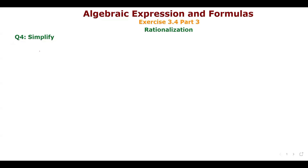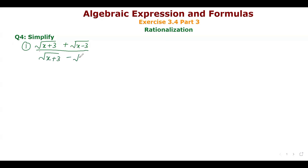We will start our work with question number 4. The numerator is under root x plus 3 minus under root x minus 3, and the denominator is under root x plus 3 minus under root x minus 3. We have to multiply and divide by the conjugate.